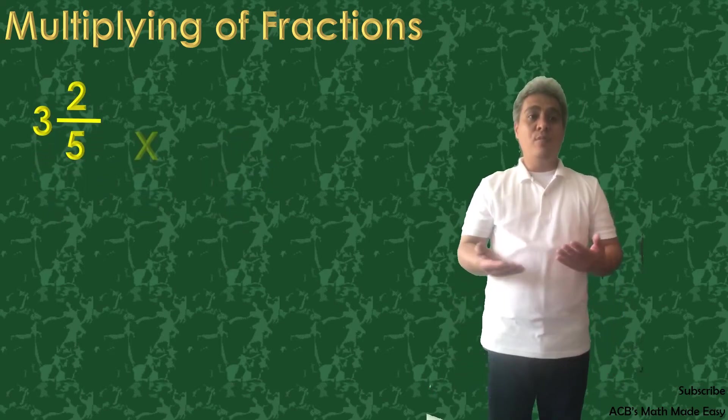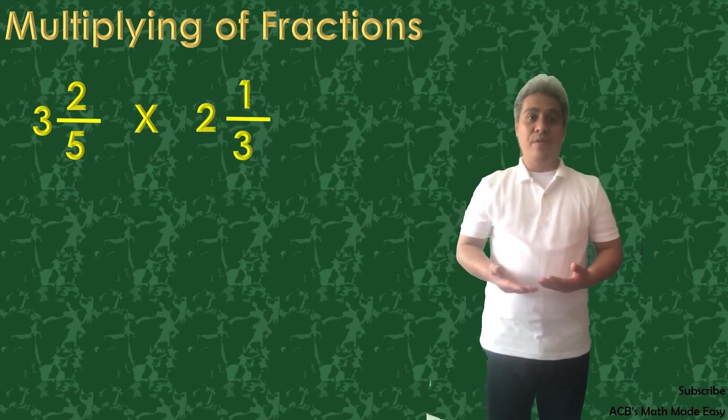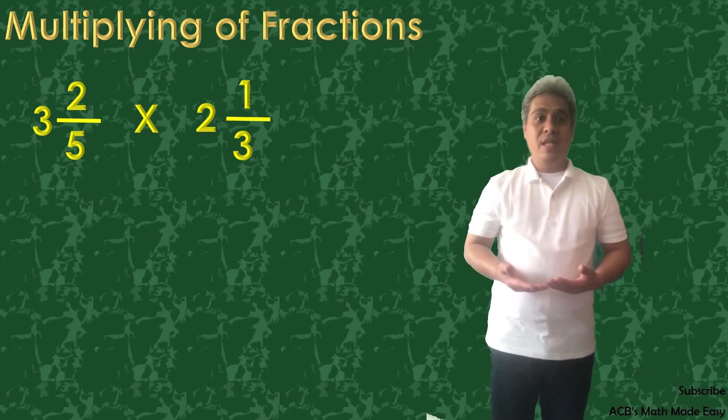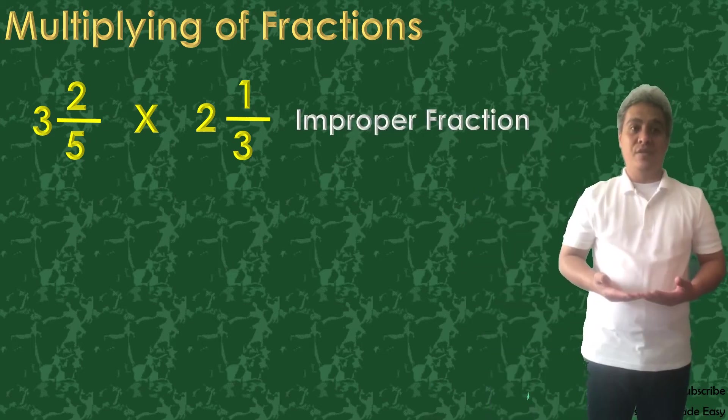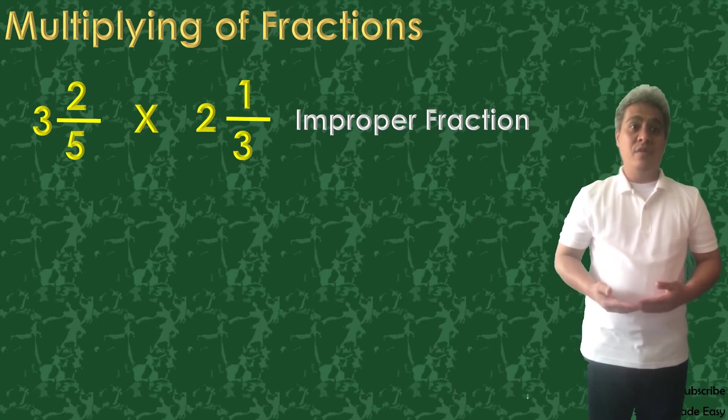We will now multiply mixed fractions. 3 and 2 over 5 times 2 and 1 third. The first step is to convert them to improper fractions. To convert them, multiply the denominator to the whole number and add the numerator.